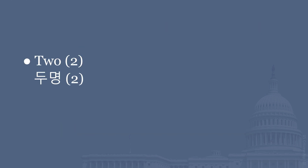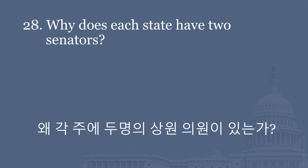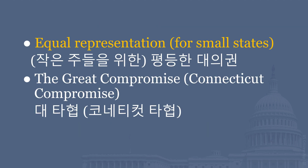How many senators does each state have? Two. Why does each state have two senators? Equal representation for small states. The Great Compromise, Connecticut Compromise.